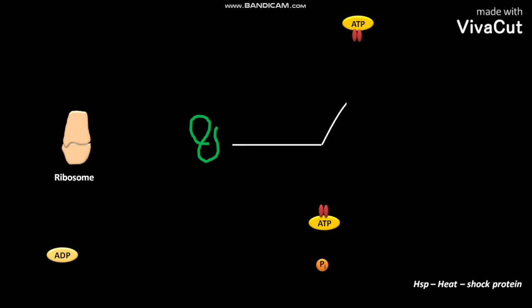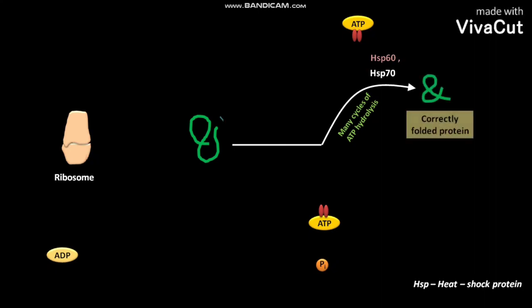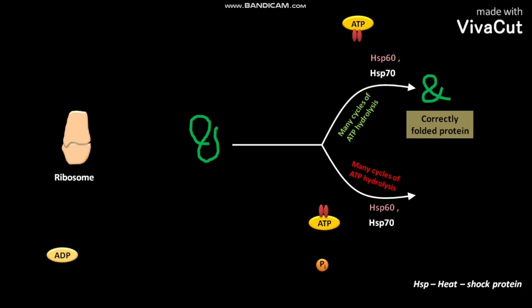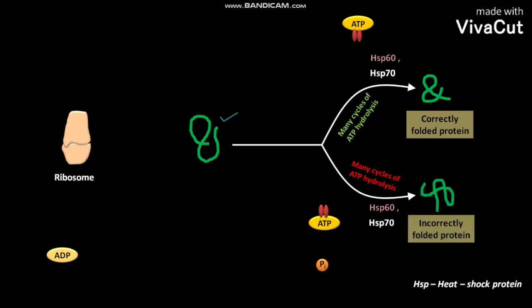Now, in one case, the Hsp-60 and Hsp-70 use many cycles of ATP hydrolysis to form a correctly folded protein from the protein released from the ribosome. In another case, if Hsp-60 and Hsp-70 do not use many cycles of ATP hydrolysis, then the protein released from the ribosome forms an incorrectly folded protein.